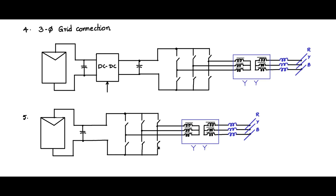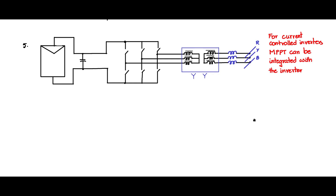In this way, we have a topology with only one power stage between the PV module and the grid. For a current-controlled inverter, MPPT can be integrated within the inverter. This approach also applies to the single-phase case, which we will now draw.